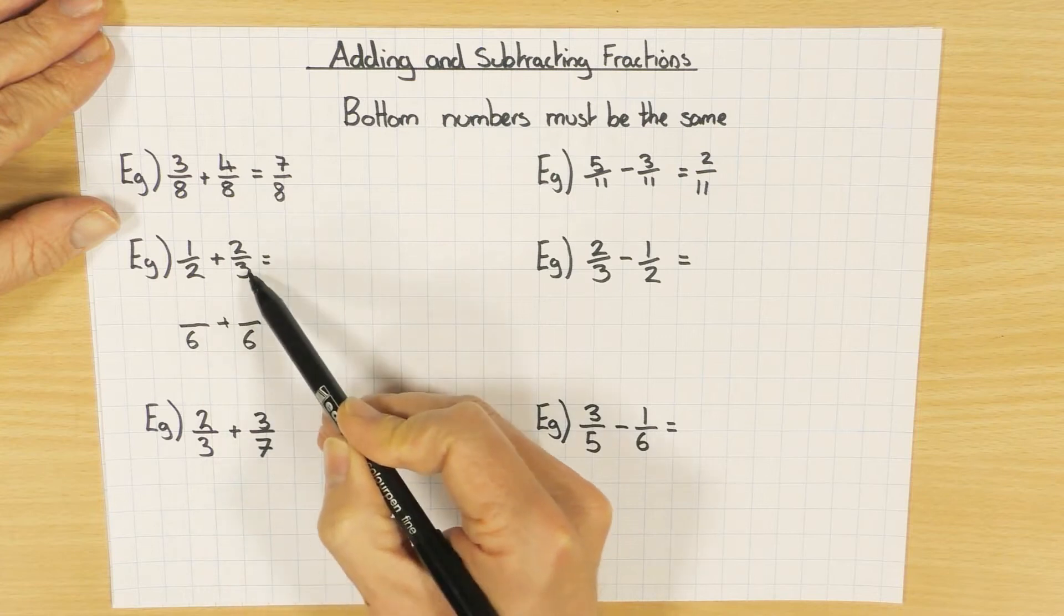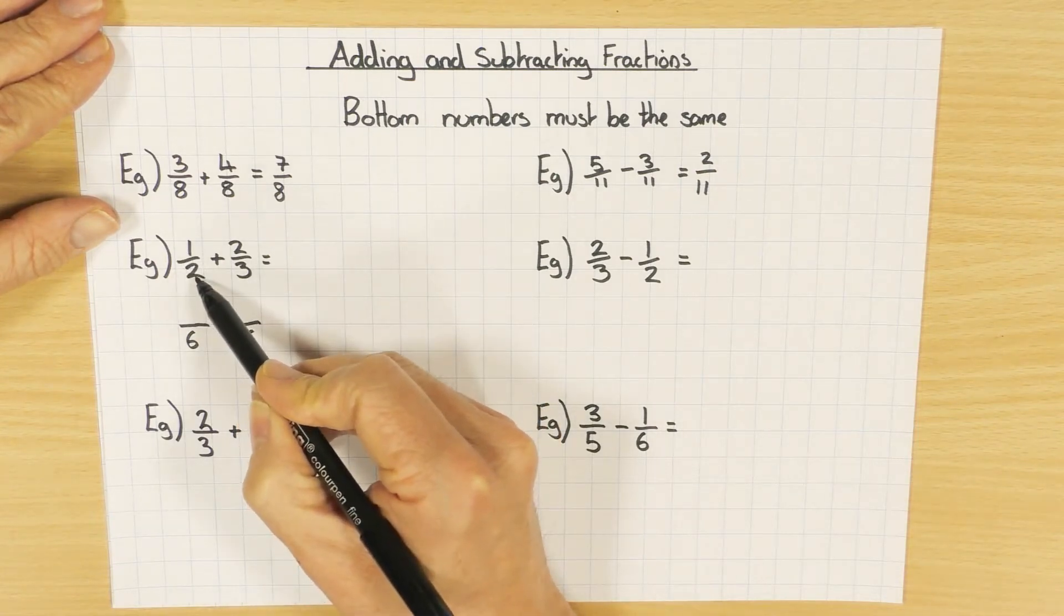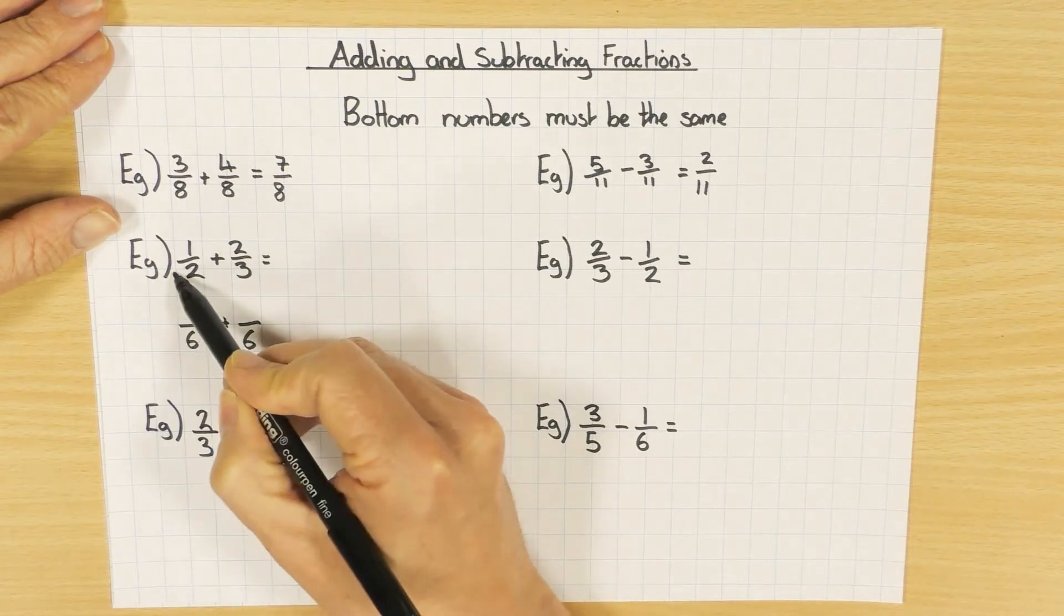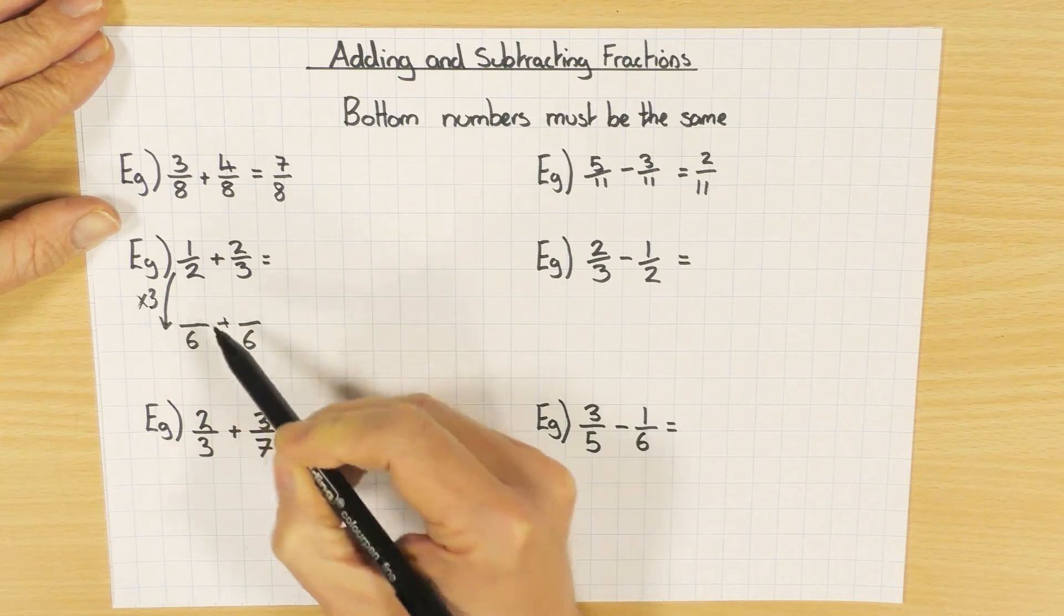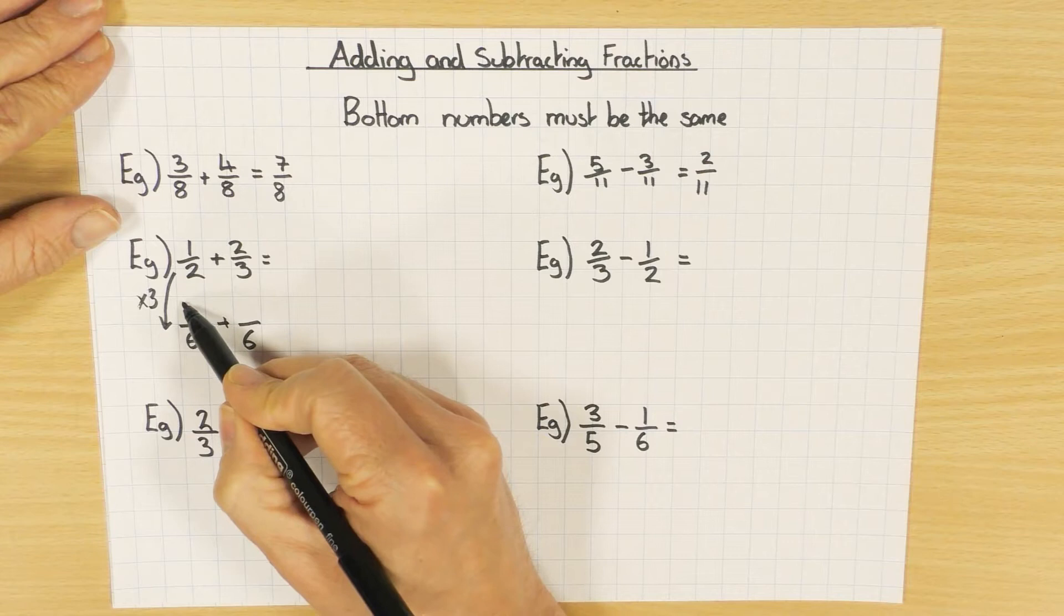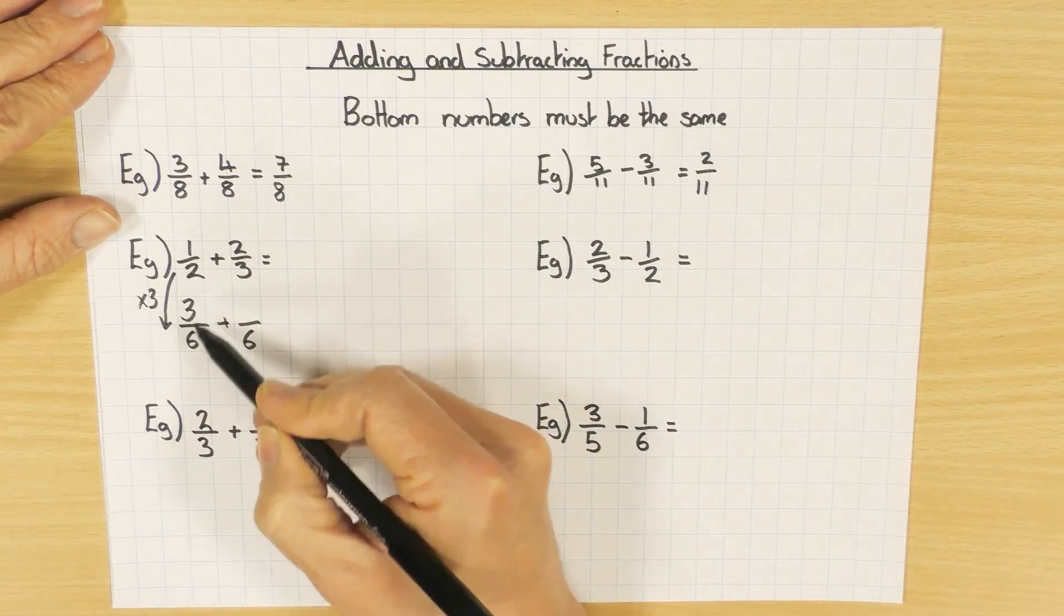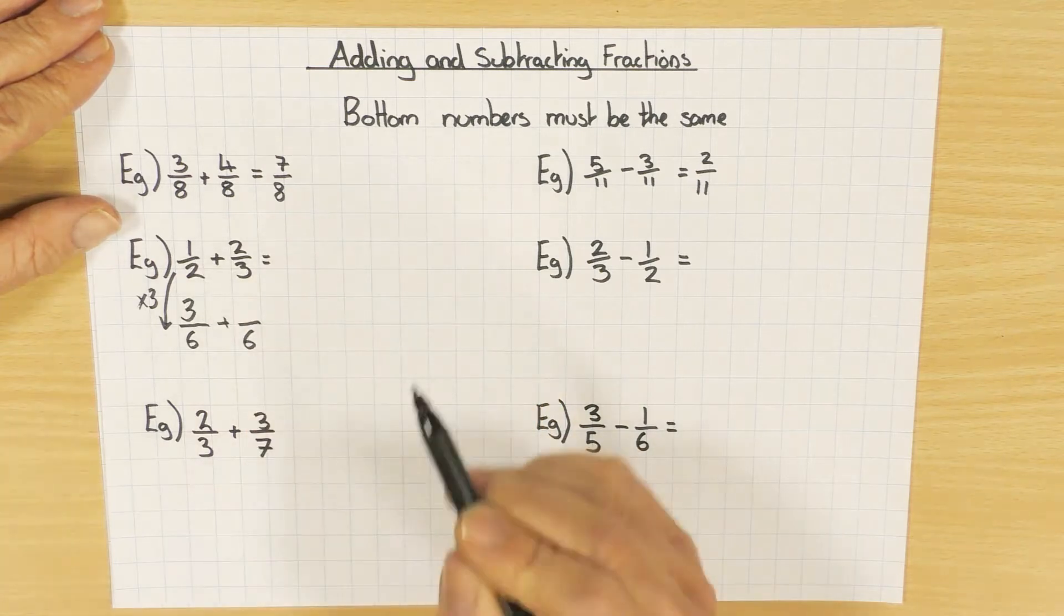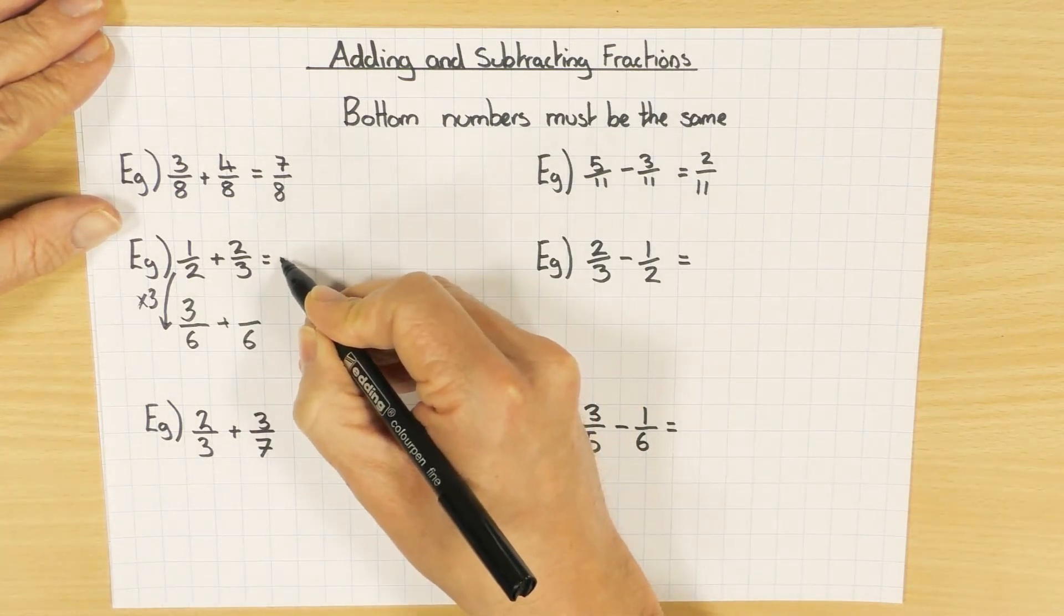Now each denominator has changed differently. So on the first fraction, two, the denominator of two has become six. What did I do? I multiplied it by three. So if the denominator has got three times bigger, we must also make the numerator three times bigger, so we have two equivalent fractions. Three sixths is the same as a half, so I haven't changed the question, I've potentially just made it a little bit easier.